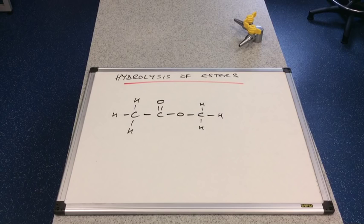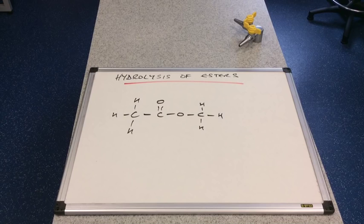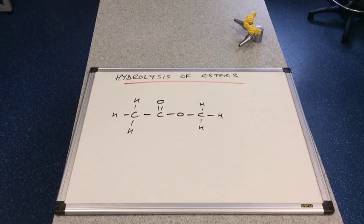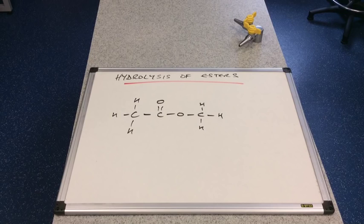We're now going to look at the hydrolysis reactions of esters. So we'd better just explain what hydrolysis is. Hydrolysis is the chemical breakdown of a substance by reaction with water. So basically what we're going to do is break the ester apart by reacting it with water. But it's not just water. You can have two types of hydrolysis: acid hydrolysis or alkaline hydrolysis.